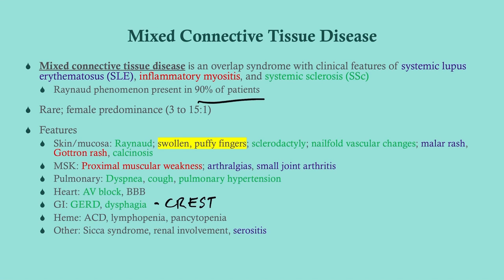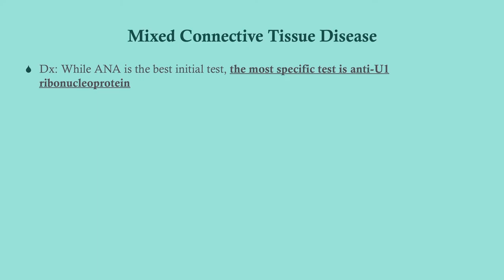Hematologically, because this is chronic inflammation, you can get anemia of chronic disease, lymphopenia, or even pancytopenia. There are other manifestations including sicca syndrome similar to what you'd see in Sjogren's, renal involvement, and serositis which we would see in lupus.